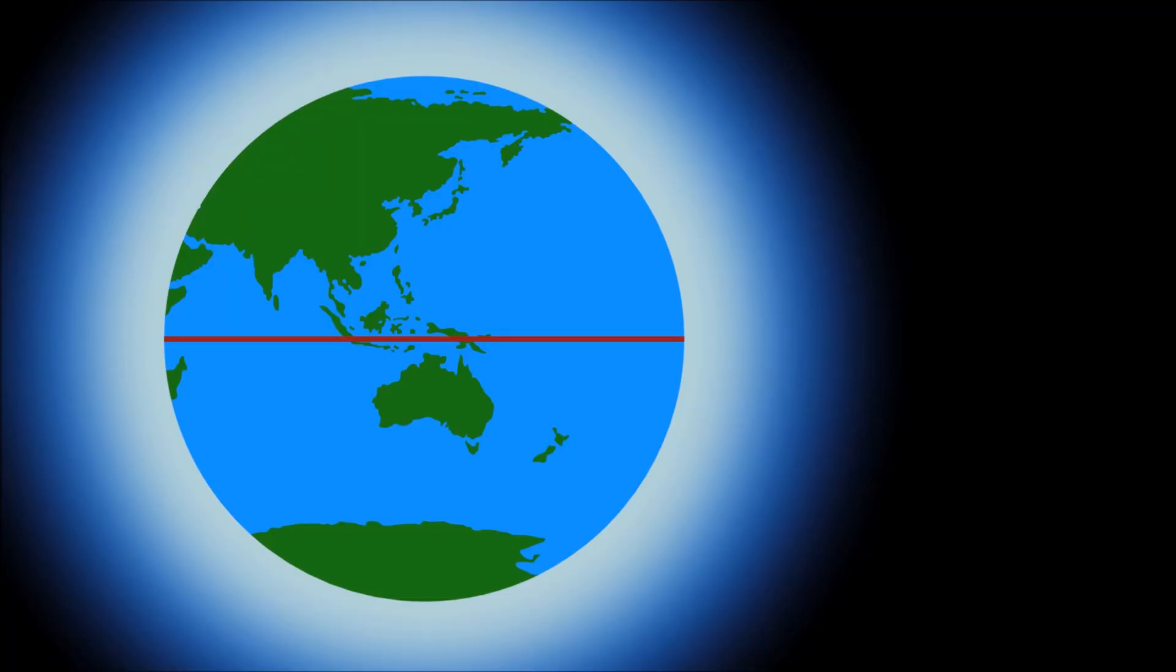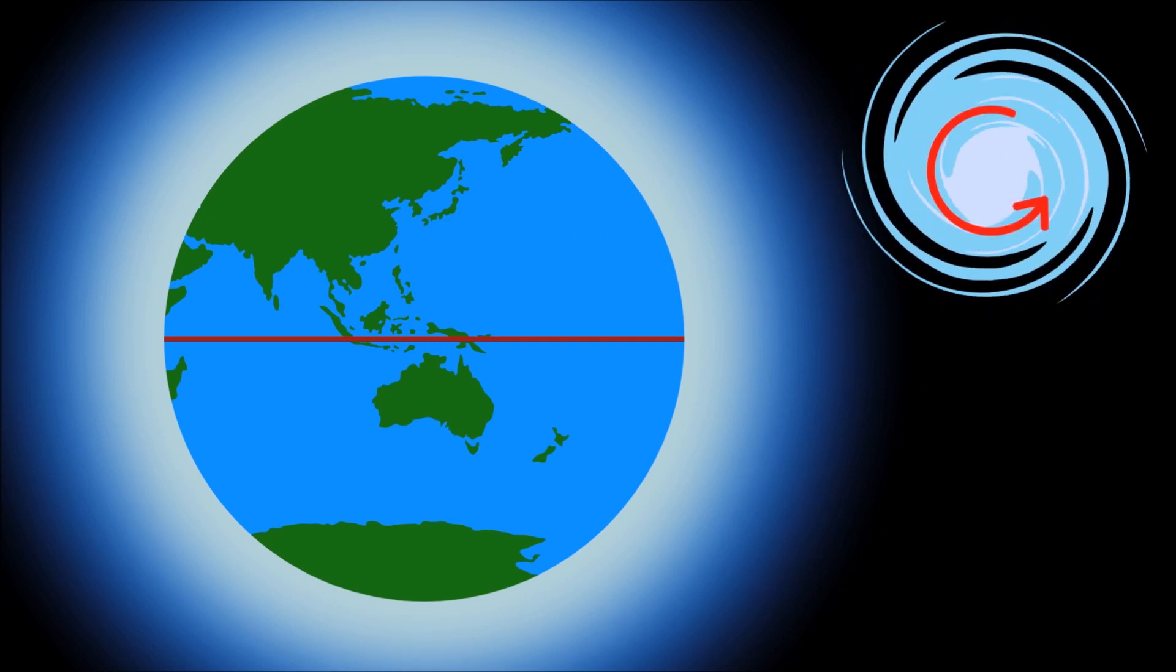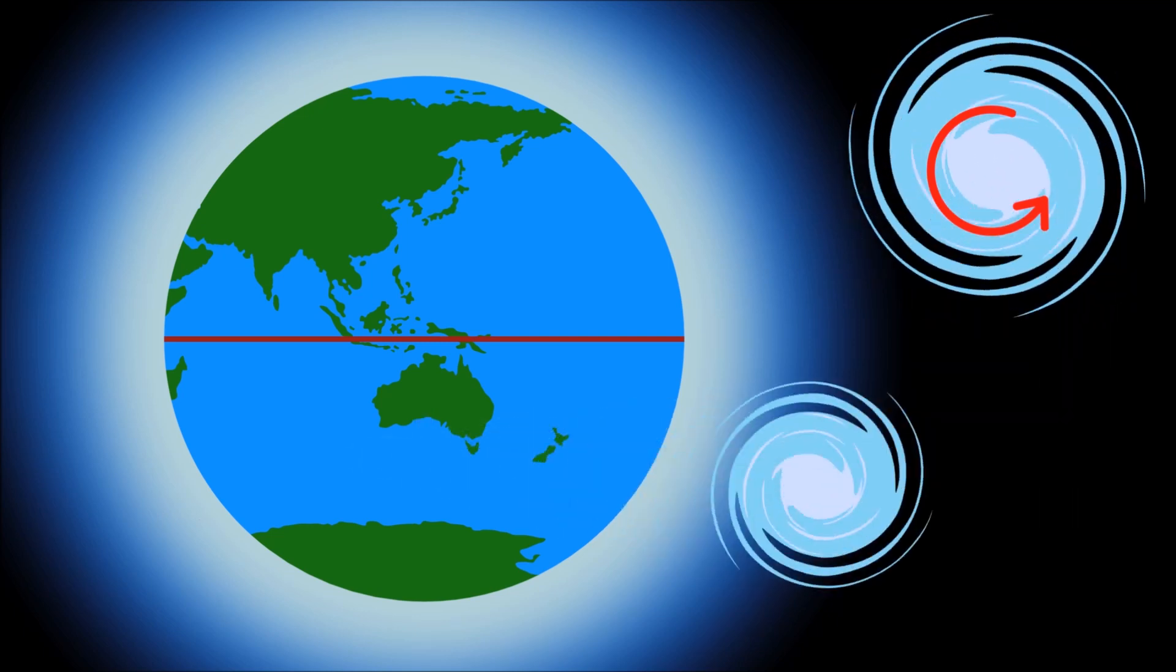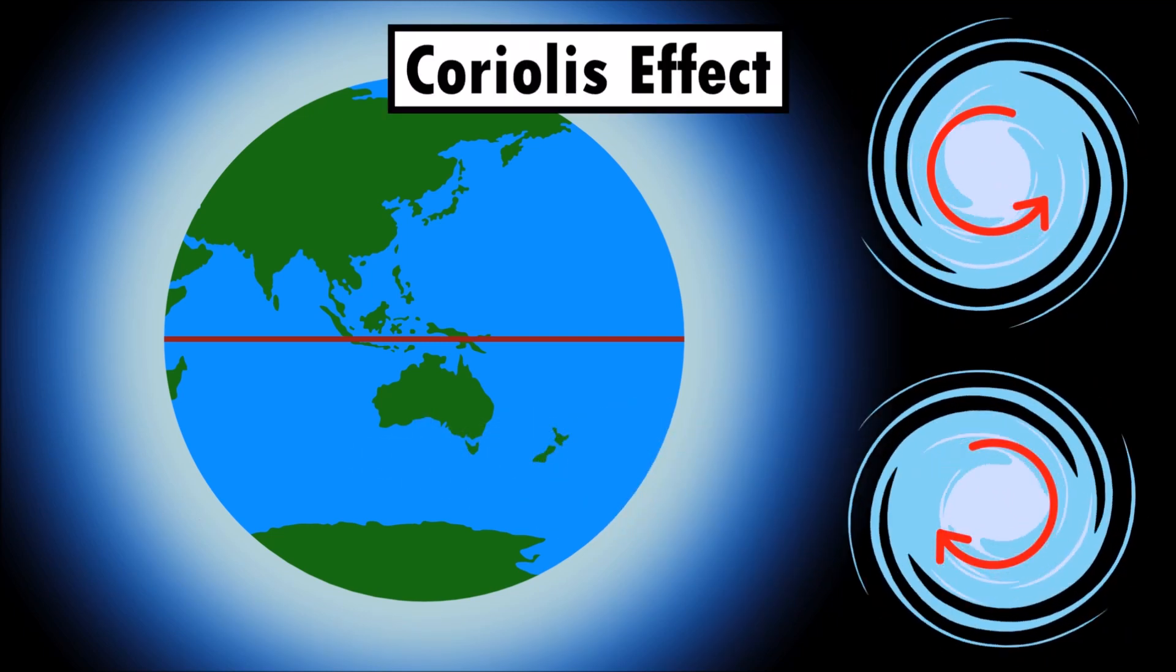Naturally occurring whirlpools spin in different directions depending on where they are on the planet. North of the equator, water spins in a counter-clockwise direction. And south of the equator, water rotates in a clockwise direction. This is called the Coriolis Effect.